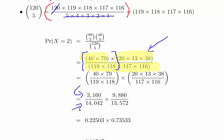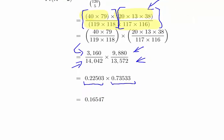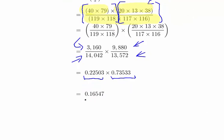That's 3,160 divided by 14,042, then the second bunch of terms: 9,880 divided by 13,572. We get 0.22503 times 0.73533. Working that out we get 0.16547 and that's the answer.